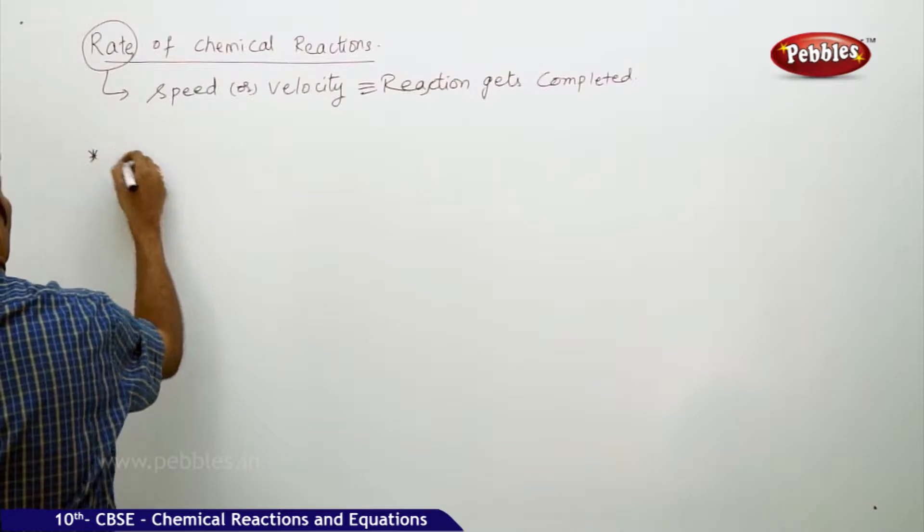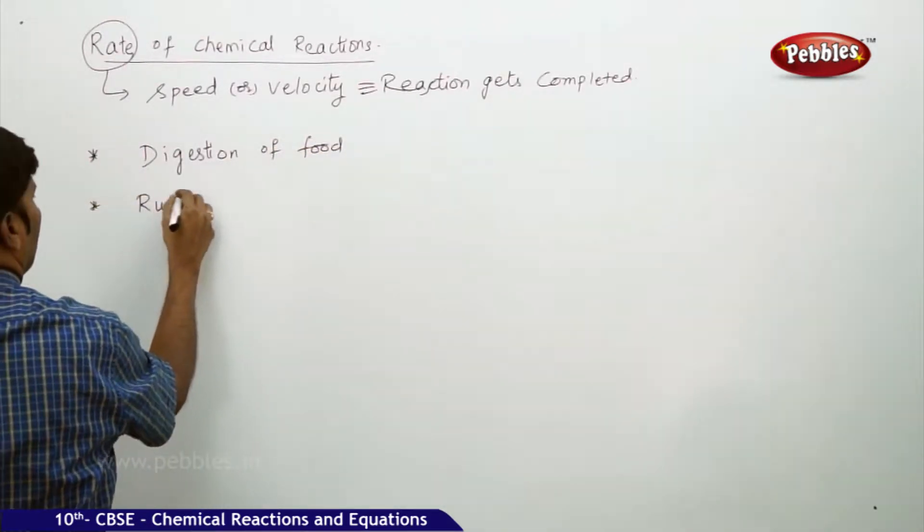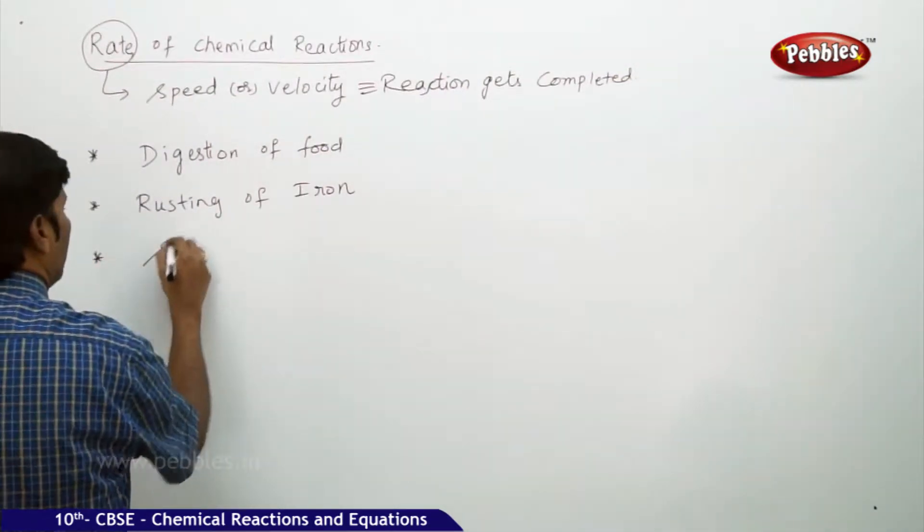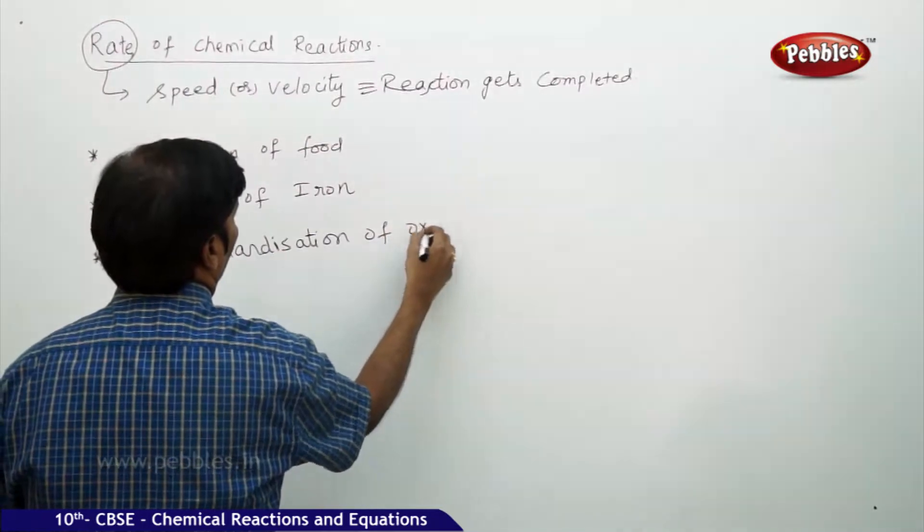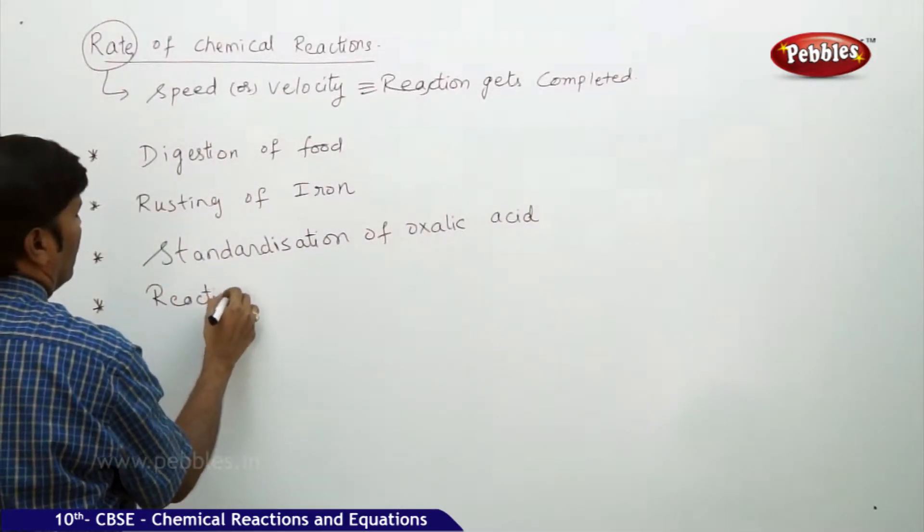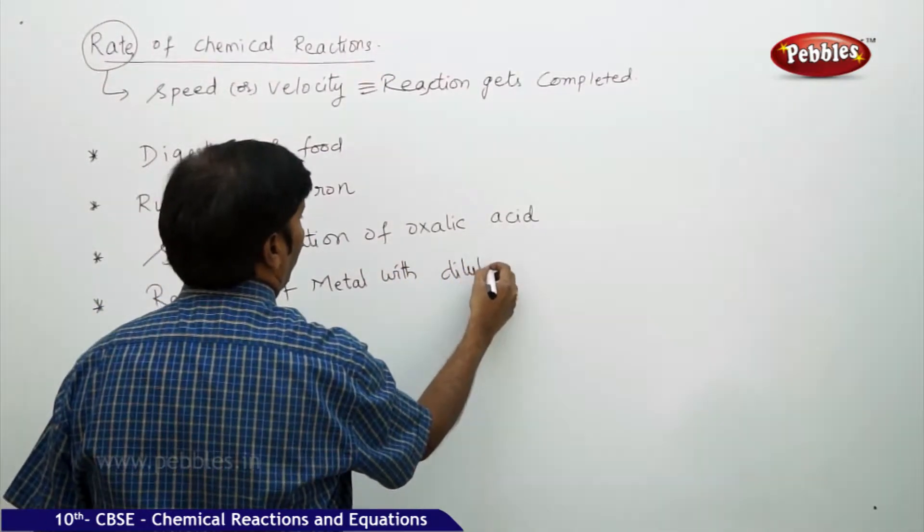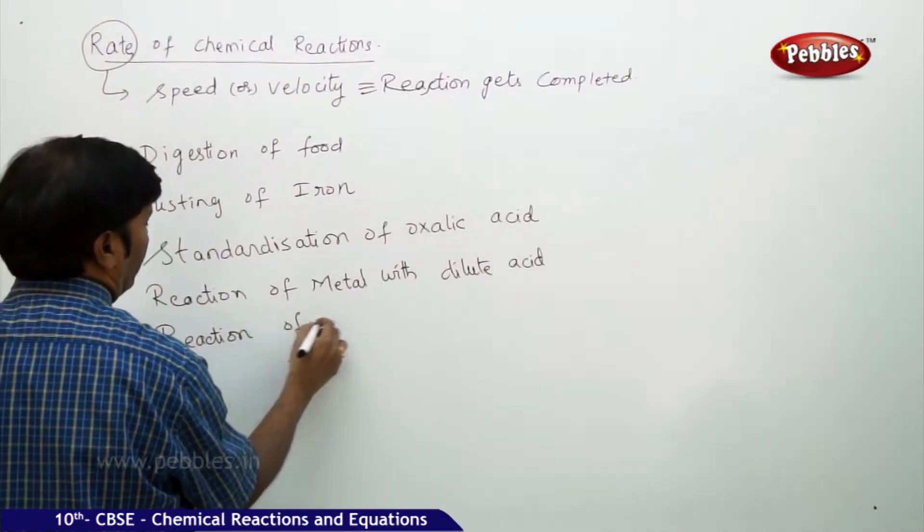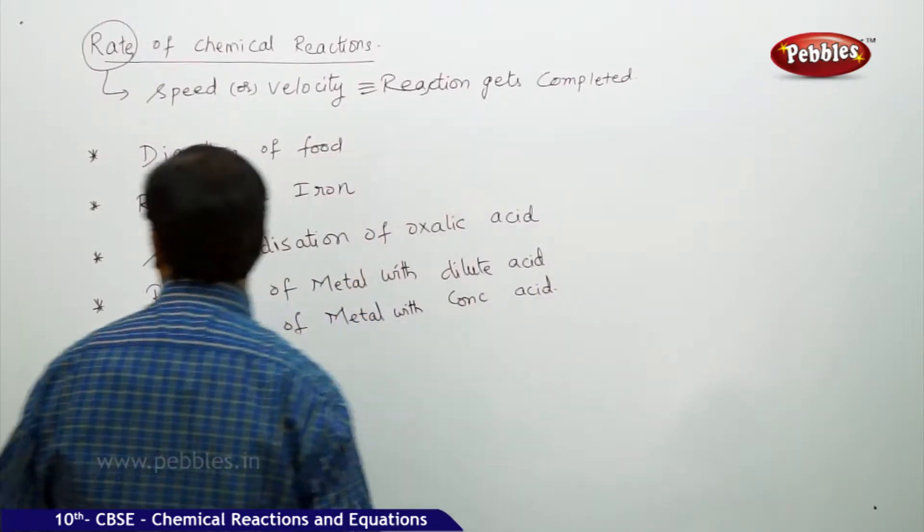Take these examples: digestion of food, rusting of iron, standardization of oxalic acid, reaction of metal with dilute acid, reaction of metal with concentrated acid, and fermentation process.